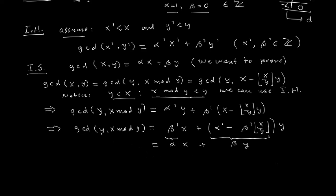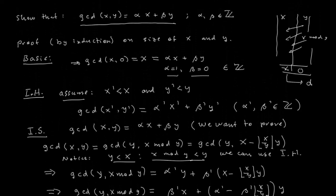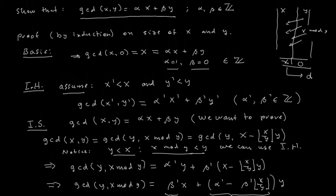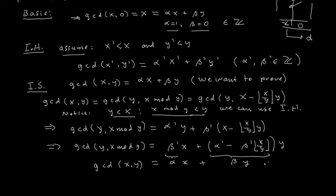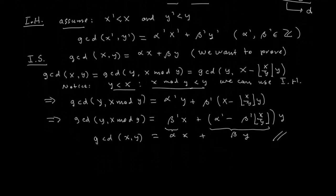Since GCD(y, x mod y) equals GCD(x, y), we have shown that GCD(x, y) equals alpha*x plus beta*y. This proves the property. It also tells us how to compute alpha and beta: alpha equals beta prime, and beta equals alpha prime minus beta prime times floor(x/y).